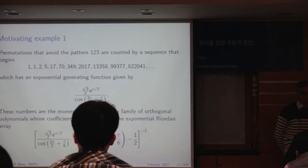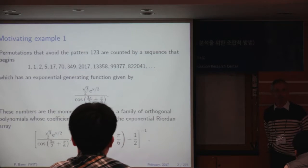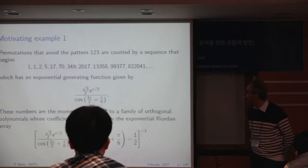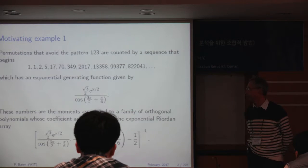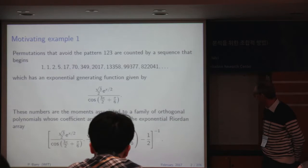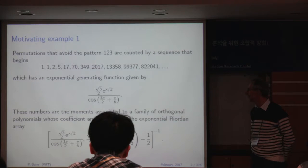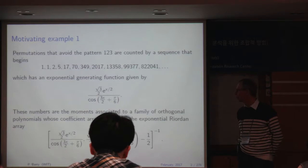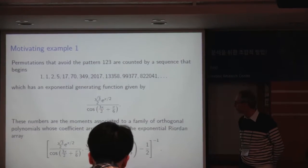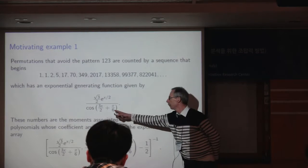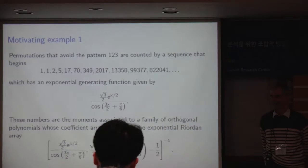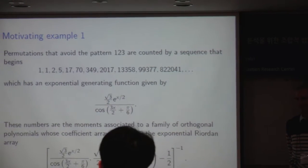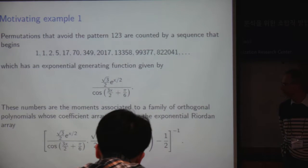What I should have said is that the permutations that avoid the consecutive pattern 1, 2, 3. These are counted by a sequence that begins 1, 1, 2, 5, 17, 17. It would not have been easy to find that the generating function of that sequence is root three over two times e to the x over two divided by the cosine of root three x over two plus pi over six. In fact, the three here possibly should be root three over two as well. It's a wonderful result.